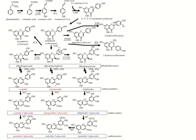Naringenin converts into apigenin — another flavonoid. Finally, you will find dihydroquercetin, dihydrokaempferol, and dihydromyricetin. These three compounds are always formed and are called flavanol structures. These flavanols are responsible for the formation of all pigment colors. First: dihydroquercetin, then dihydrokaempferol, then dihydromyricetin.